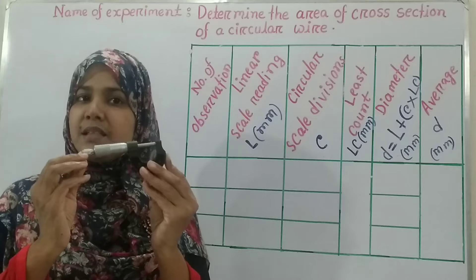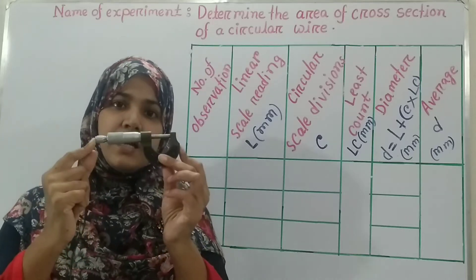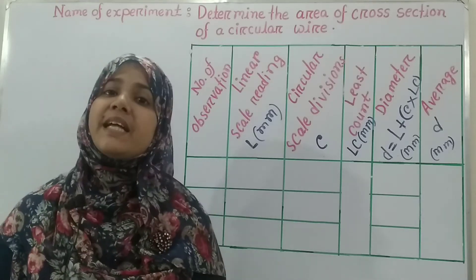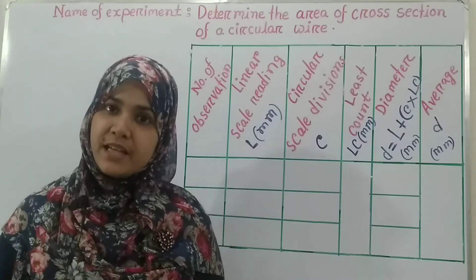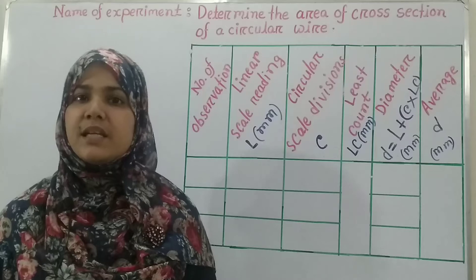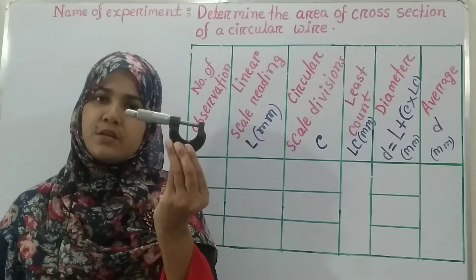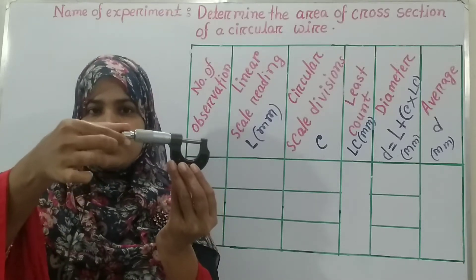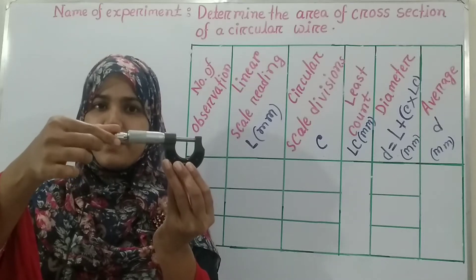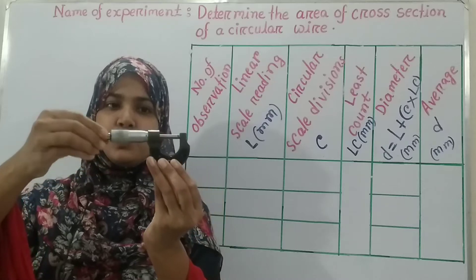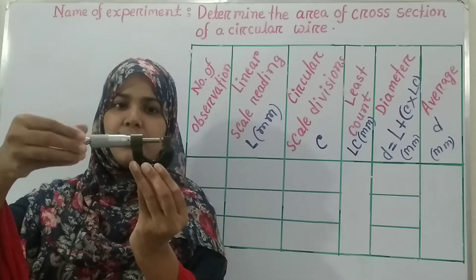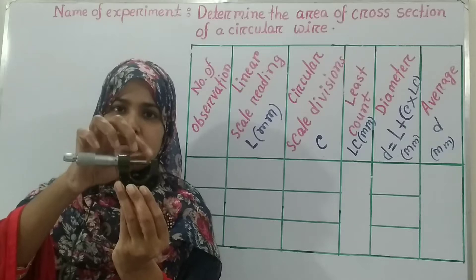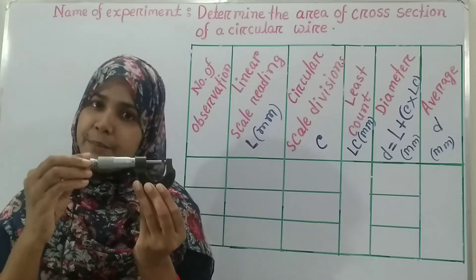You can see there's an instrument in my hand and the name of this instrument is screw gauge. With the help of this instrument I am going to measure the diameter of that circular wire, and after that we can easily identify the cross-sectional area. It's a U-shaped screw gauge and here's a cap. When I move the cap, the two ends of the screw gauge will be visible, and in between these two ends I will put the wire so I can easily measure the diameter.